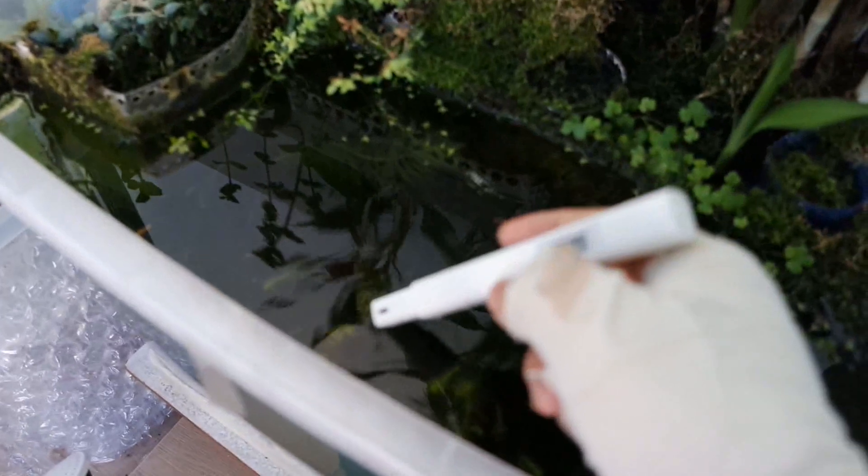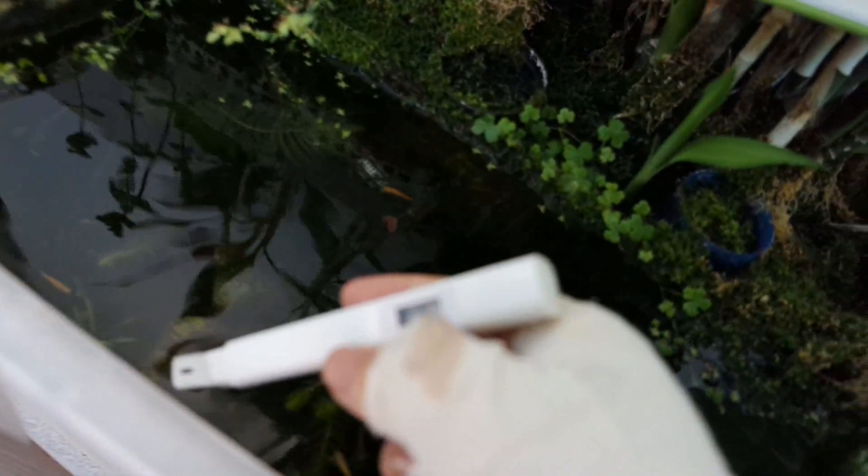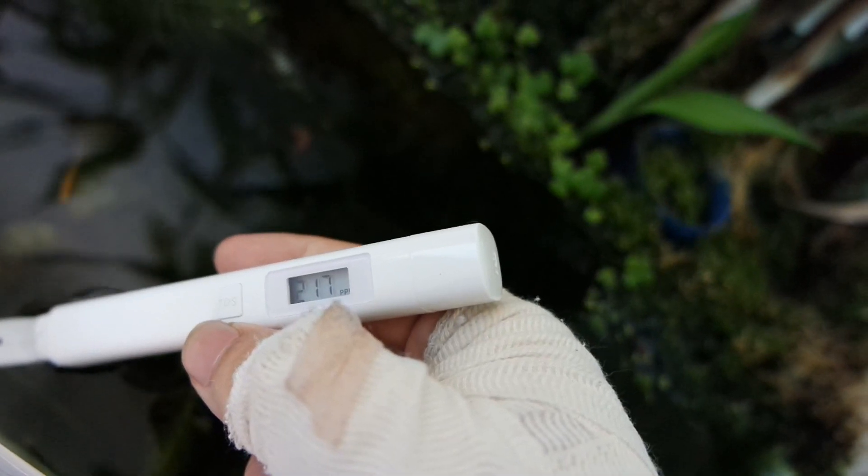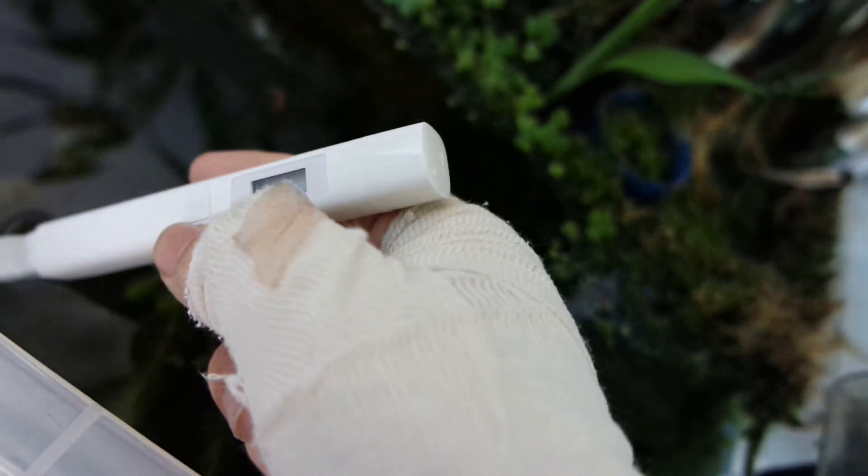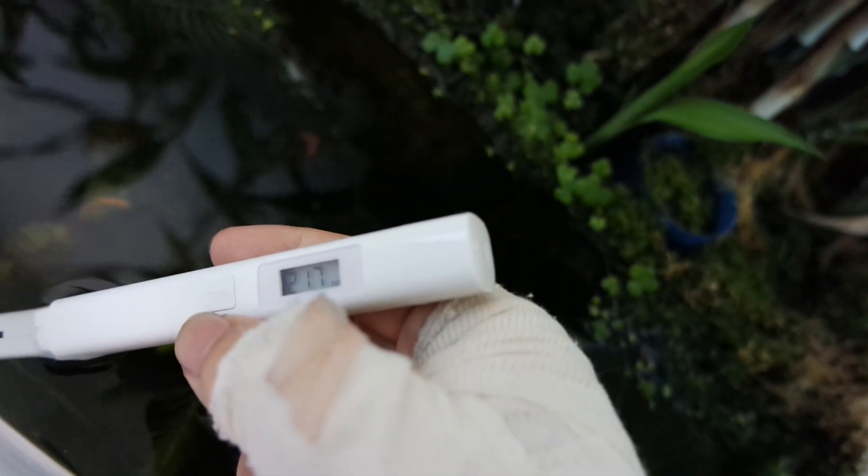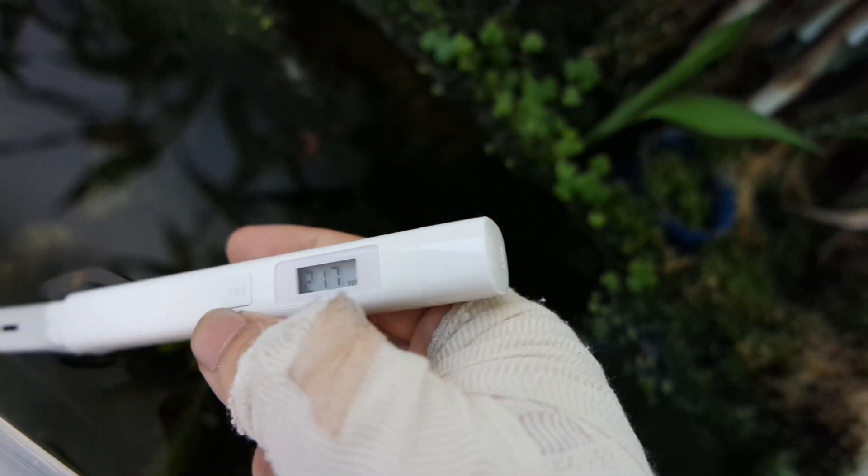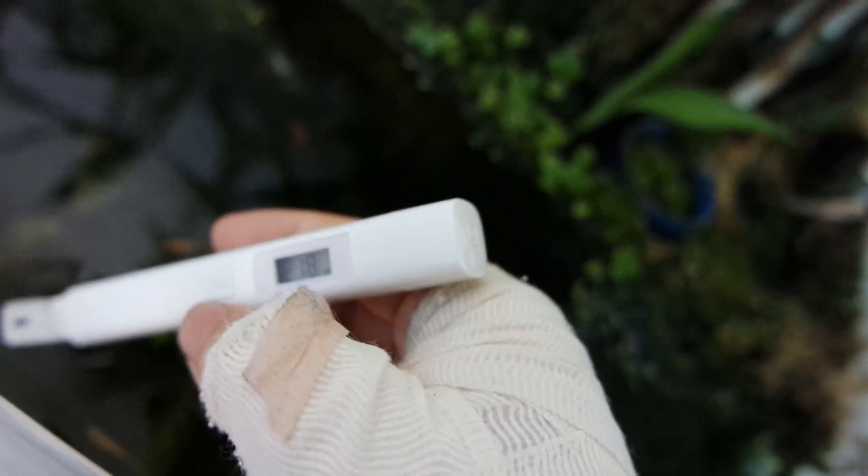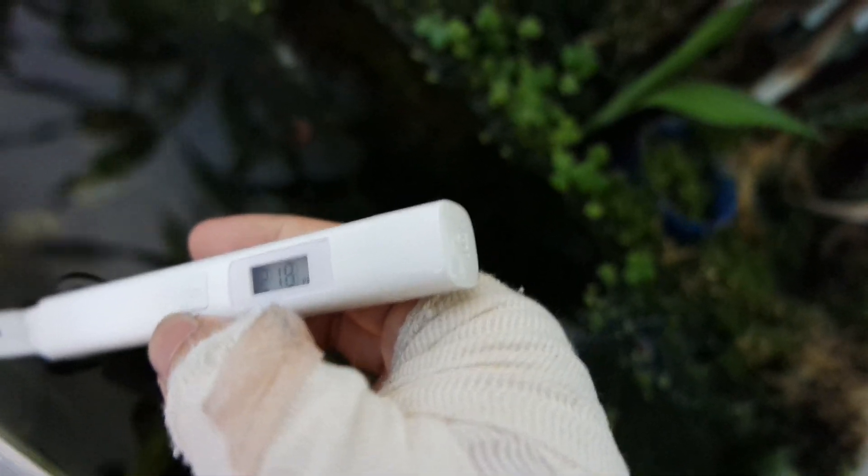Next up is my turtle tank. Reading there is about 216, 217. So that is right on range. This tank usually comes around 200 vast majority of times. So yeah the tank is doing well. There is nothing irregular about it. So that would be the TDS tests of my tanks.